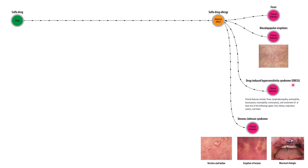With DRESS syndrome, in addition to fever, rashes, and other features, if the liver is involved you'll see elevated liver enzymes. If the kidney is involved, serum creatinine and BUN will be elevated. If the respiratory system is involved, you might hear wheezing or crackles suggesting edema. And if the heart is involved, you might see elevated cardiac enzymes or an altered ECG.